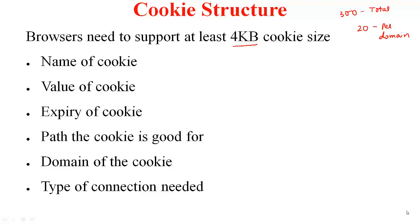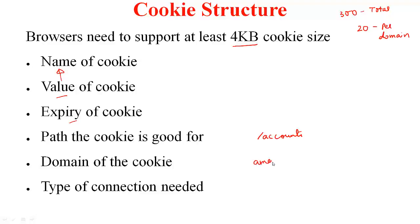A cookie carries the following information: it has a name and a value associated with that name, an expiry date, and the path the cookie is valid for. For example, if the path is accounts, this cookie is valid for all objects stored under accounts. The domain captures a given organization like amazon.com.